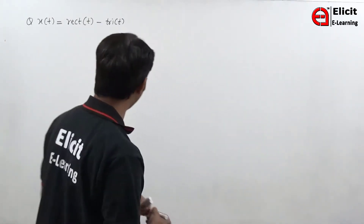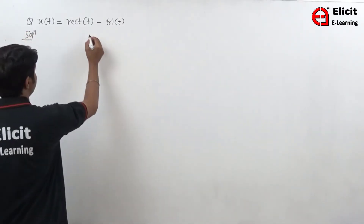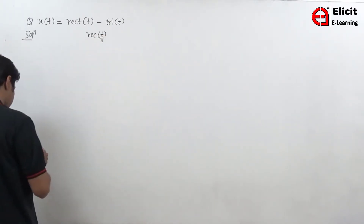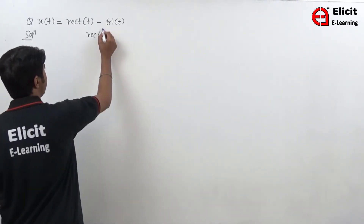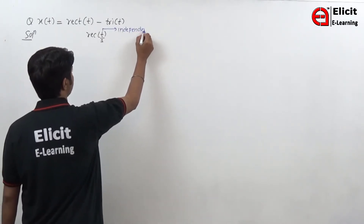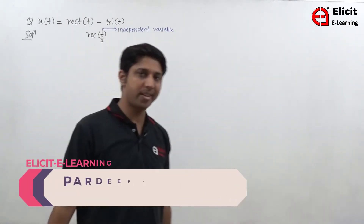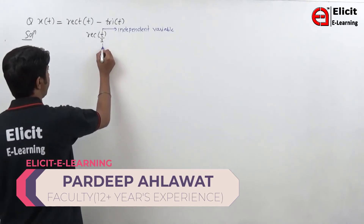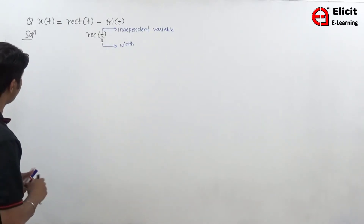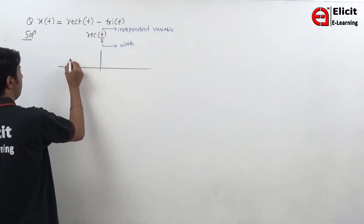So let me first draw both the signals. I am going to draw first this signal rect of small t. We can write this as rect of small t by 1. The signal will look like this.